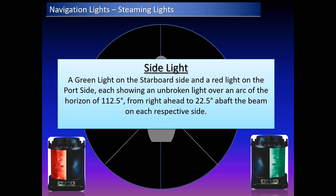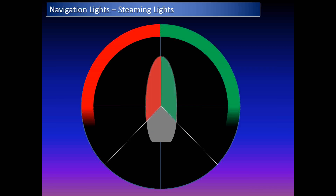The sidelight is defined as a green light on the starboard side and a red light on the port side. Each light shows an unbroken light over an arc of 112.5 degrees — from right ahead to 22.5 degrees abaft the beam on each respective side. The green light is visible from right ahead to 22.5 degrees abaft the starboard beam, and the red light from right ahead to 22.5 degrees abaft the port beam.